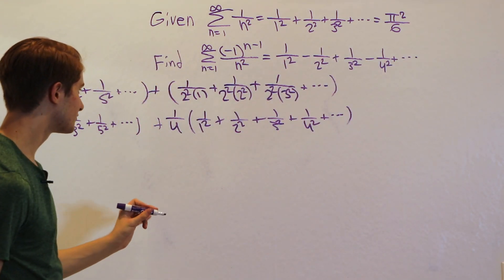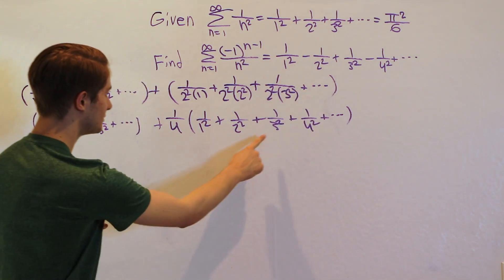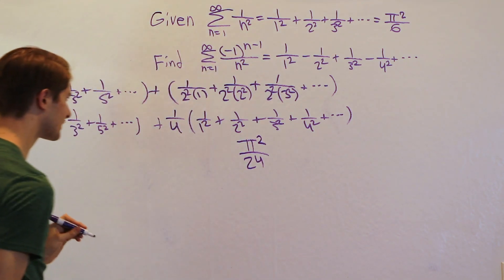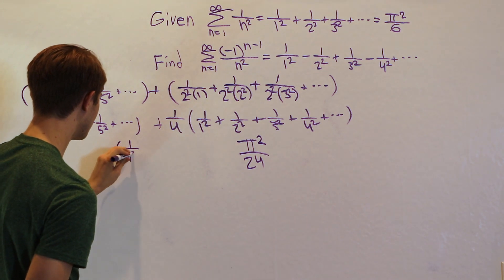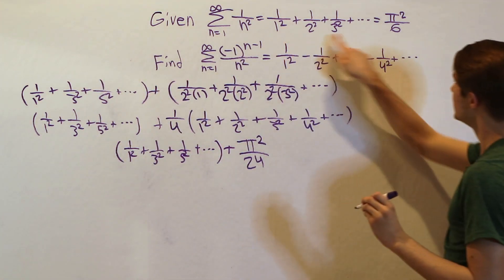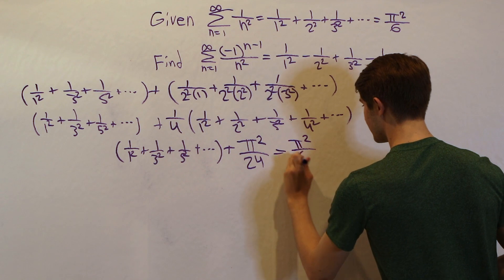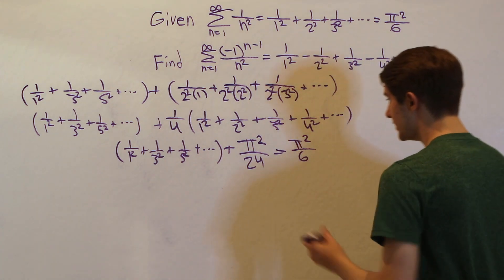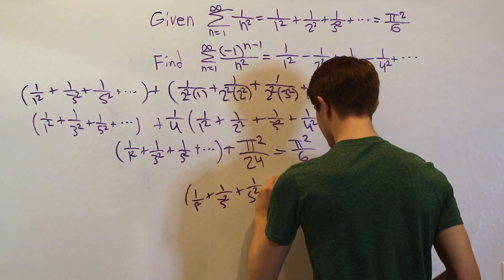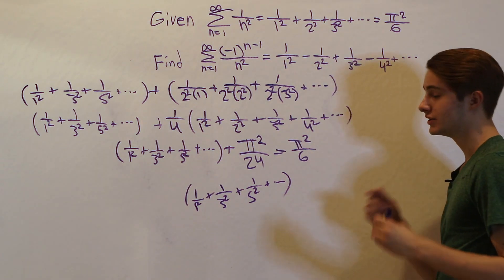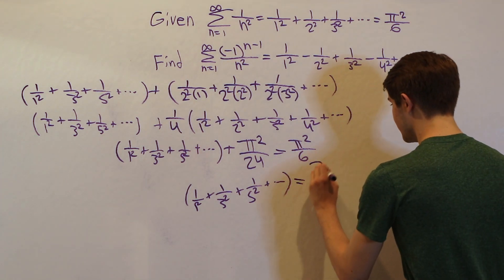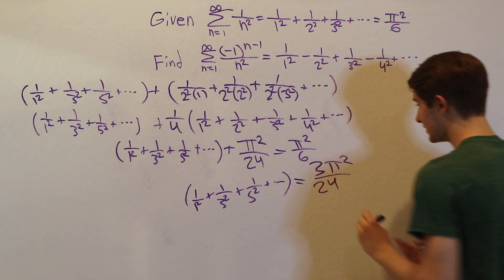So the sum of all the even squared terms is going to be pi squared over 6 times 1 over 4, which is pi squared over 24. And then we know that adding the odd squared terms gives us our original answer of pi squared over 6, which means we can solve for the odd squares. Subtracting pi squared over 24 from each side: pi squared over 6 is 4 pi squared over 24, so 4 pi squared over 24 minus pi squared over 24 gives us 3 pi squared over 24 for the sum of the odd squared terms.